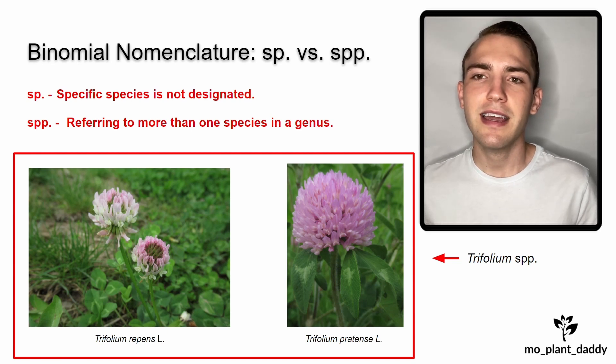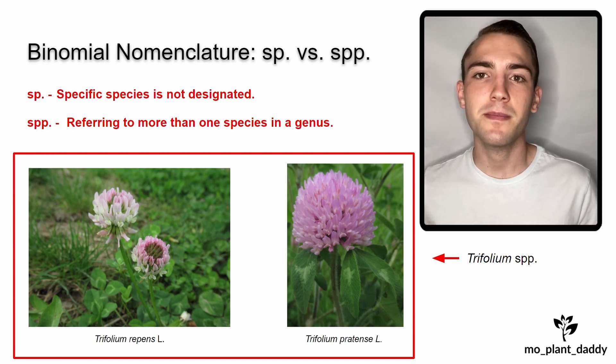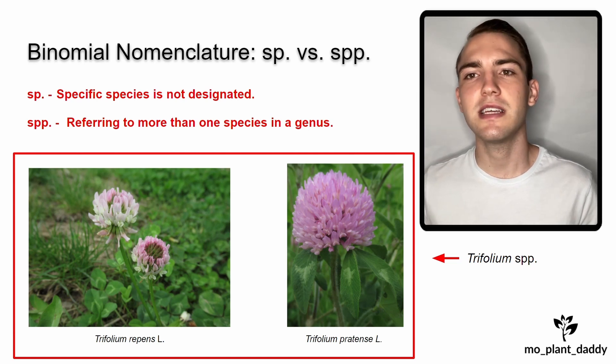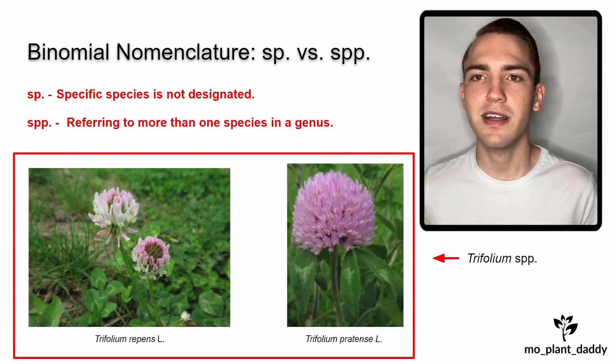Notice that neither the SP or SPP ending is italicized. Only the genus and specific epithets are italicized.